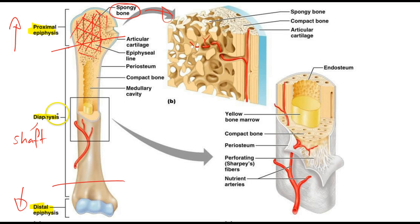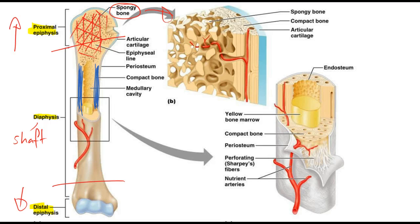The diaphysis is compact bone, meaning that the fibers are unidirectional — they run in one direction. So although solid and very hard, because the fibers run all in one direction, it's actually easier to break at that point.